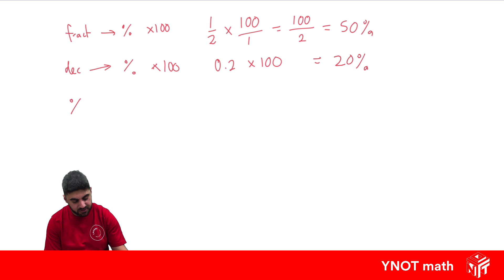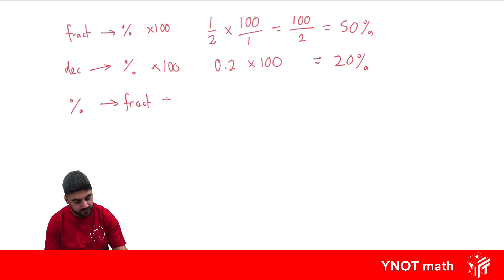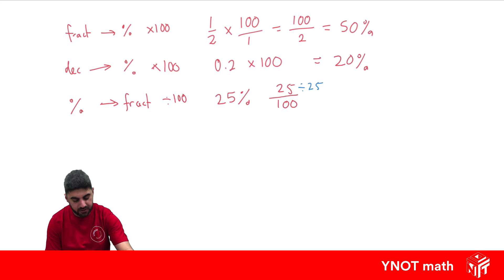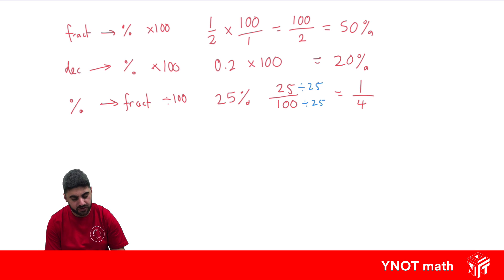Next, we're going to go from a percentage to a fraction. All we have to do here is take the percentage and divide it by 100. So let's look at 25% — we just take the 25, divide it by 100, and all we have to do is simplify our fraction. They're both divisible by 25. 25 divided by 25 is 1, 100 divided by 25 is 4, and we get a quarter as the final answer.